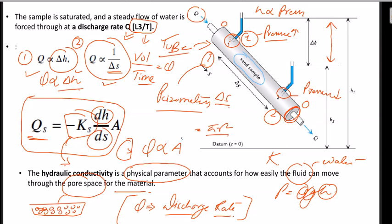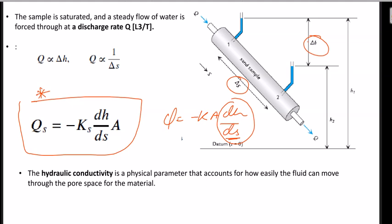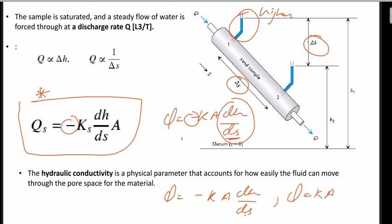This equation is very important — questions are asked from it almost every year. So Q equals minus K times A times dH/dS. You have to remember that dH is the change in elevation, meaning the change in pressure with distance. The minus sign is just an algebraic correction indicating flow moves from higher pressure to lower pressure values — don't let it confuse you.